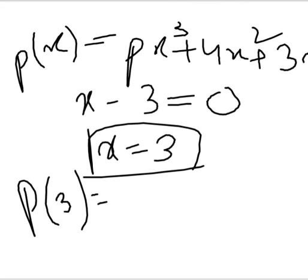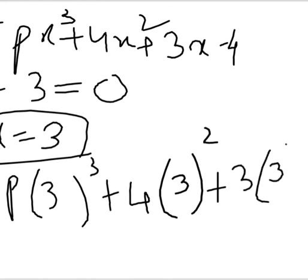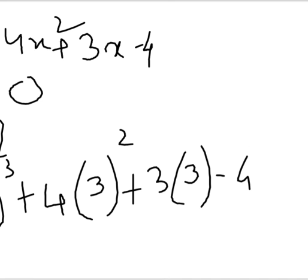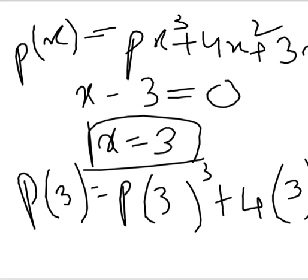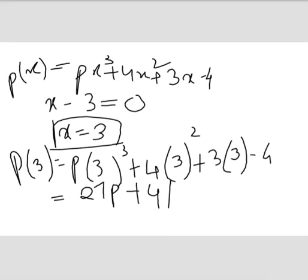Now wherever you see x in the polynomial, just substitute 3. It's very easy. Instead of p(x), just write p(3): 3³ + 4 × 3² + 3 × 3 - 4. When you solve all of this, you get 27p + 41.